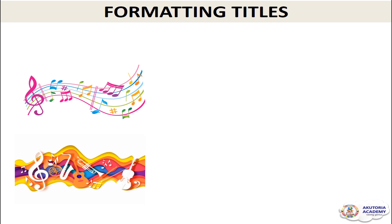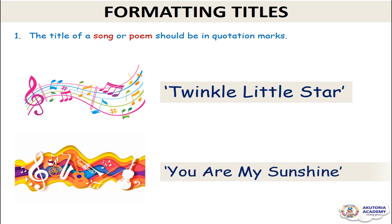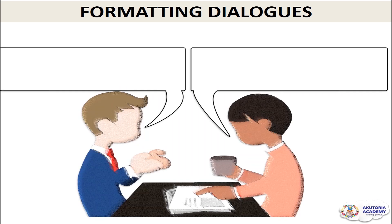For songs and poems, the format is different — you put the title in quotation marks. So the poem 'Twinkle Little Star' you write it in a quotation mark, and the song 'You Are My Sunshine' you write it in a quotation mark. This is the format for writing titles of songs and poems.